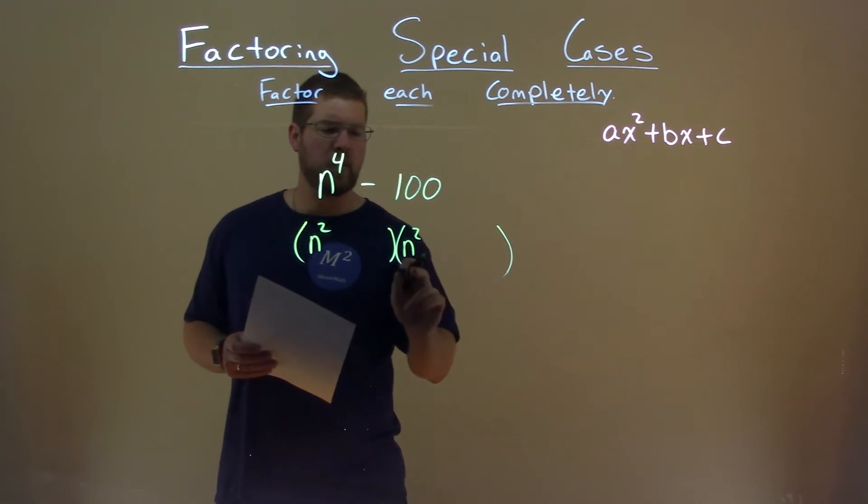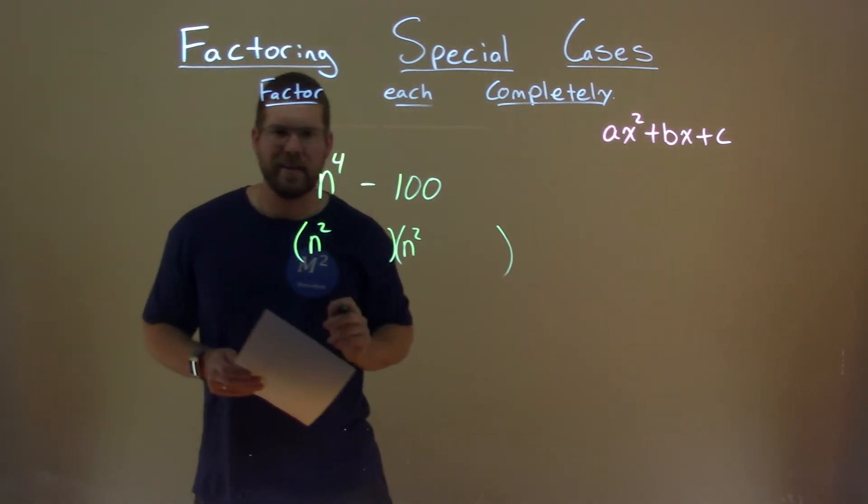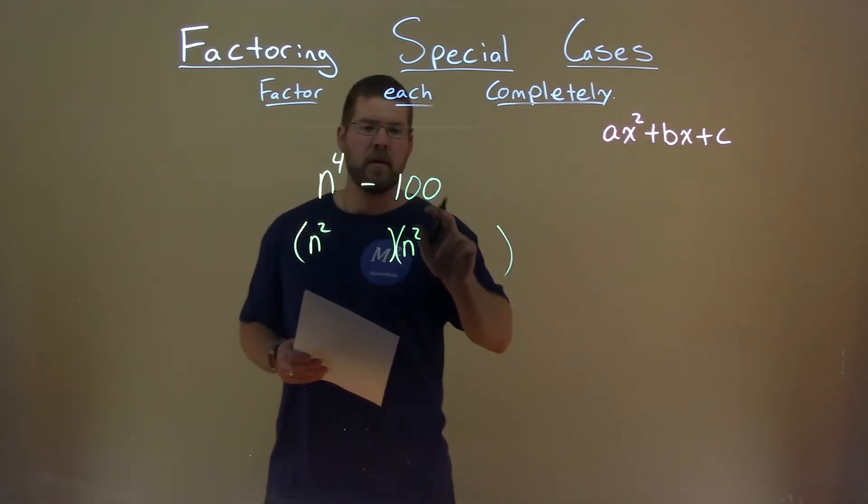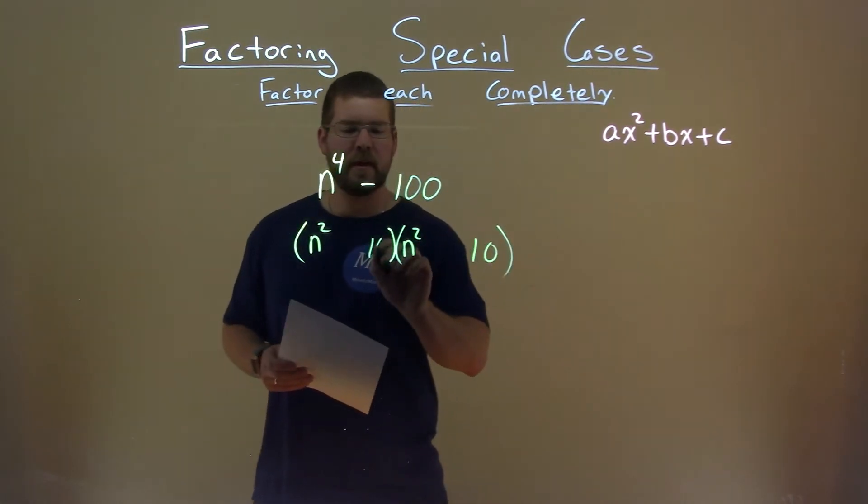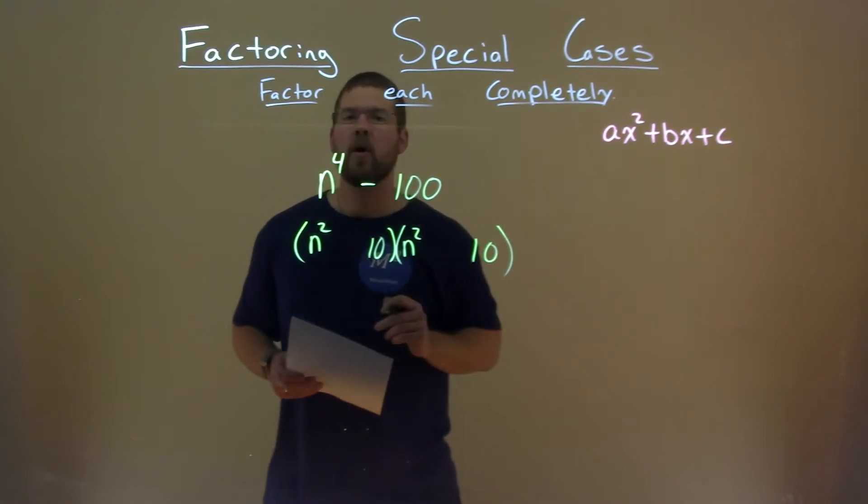So if I put n squared and n squared here, when they're multiplied, they get us n to the fourth power. What about 100? Well, square root of 100, like I said, was 10. 10 here and 10 here. 10 times 10, 100.